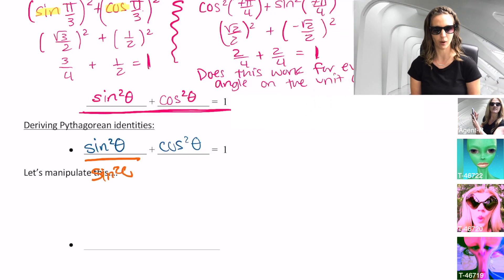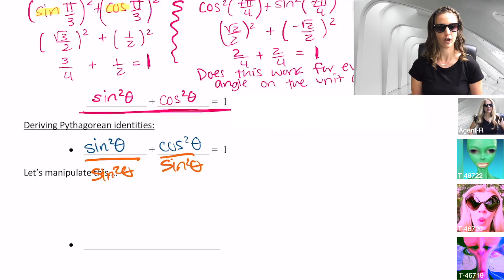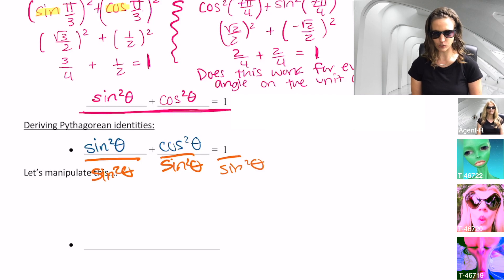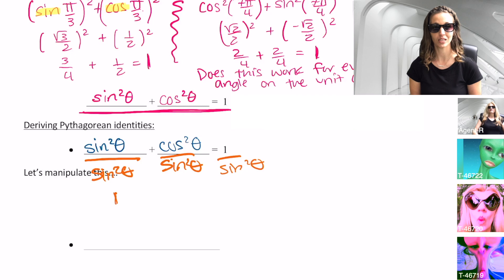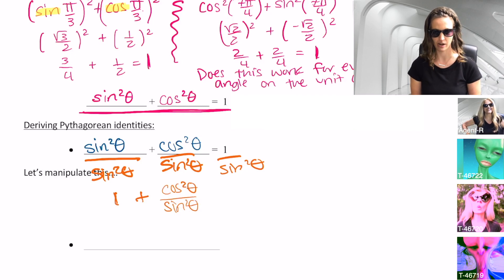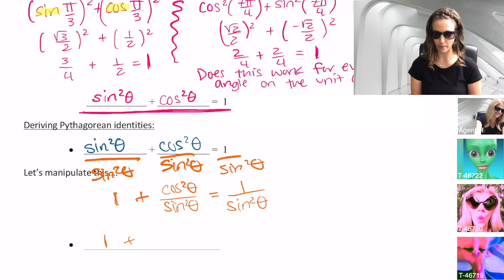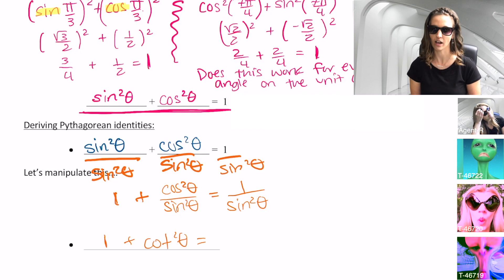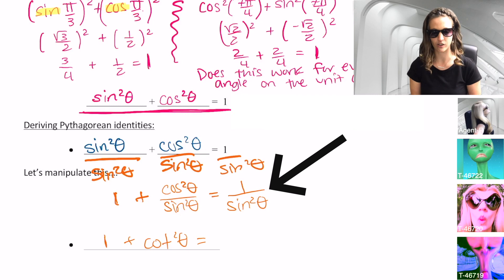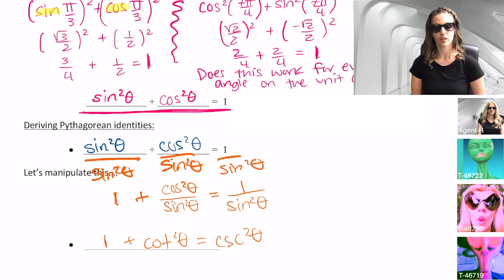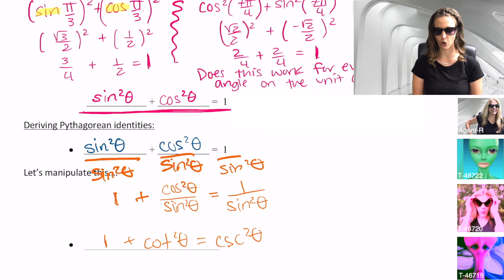We call this the Pythagorean identity. The Pythagorean identity can take on three forms — this is one of the three. To find the other forms, we simply manipulate the identity. Let's divide by sin²θ: dividing each piece by sin²θ, sin²θ ÷ sin²θ = 1, plus cos²θ ÷ sin²θ equals 1 ÷ sin²θ. Cosine over sine is cotangent, so cos²θ ÷ sin²θ is cotangent squared. And 1 over sin²θ is cosecant squared. So the second form is: 1 + cot²θ = csc²θ.